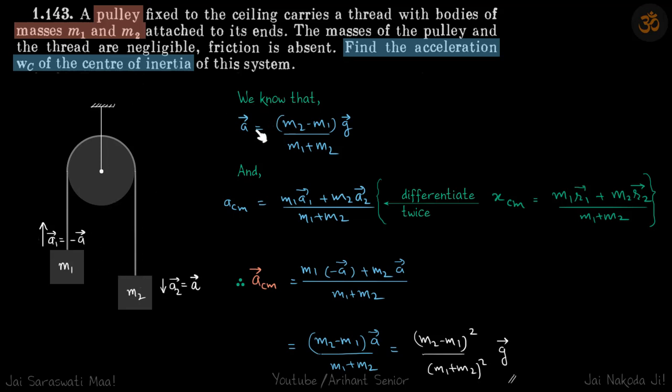We have already derived many times that acceleration A of the system of M1 and M2. In this direction, if it is downwards, we are assuming A to be downwards, then A is M2 minus M1 upon M1 plus M2 into G vector.